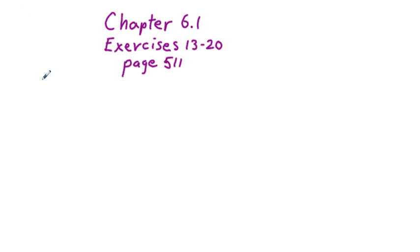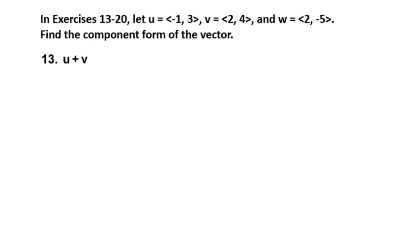Chapter 6.1, exercises 13 through 20, page 511. We're going to look at the odd number problems. In exercises 13 through 20, let u be the vector <-1, 3>, v be vector <2, 4>, and w be vector <2, -5>. Find the component form of the vector.